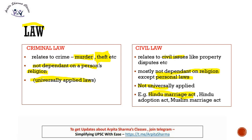Civil laws relate to civil issues like property disputes — for example, if two brothers have a property dispute, or an issue arises while buying or selling property, or a dispute over financial transactions, that comes under civil laws. Mostly, civil laws are also not dependent on religion, except for personal laws. Personal laws are an exception here, which is why we say civil laws are not universally applied.